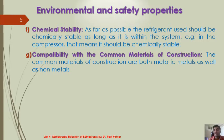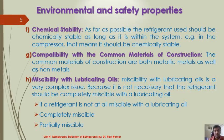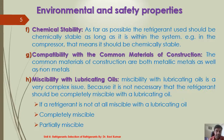Compatibility with the common materials of construction is also important. The common materials of construction are both metallic metals as well as non-metals. This is a very important practical requirement — the refrigerant we use should be compatible with all materials of construction, such as the materials used for constructing heat exchangers, the various seals used in the systems, and the various plastics used in the system. So it should not react with any other materials.